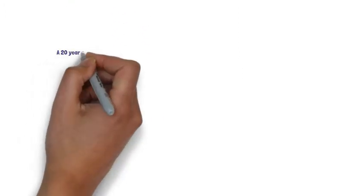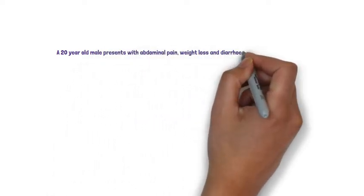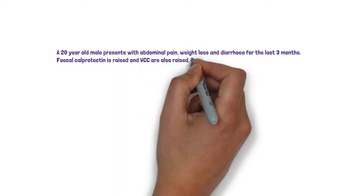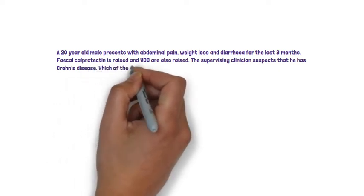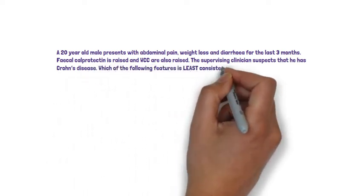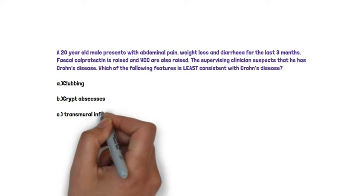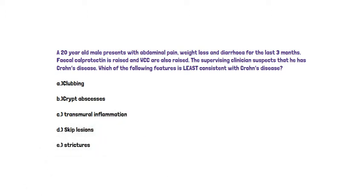The first question concerns a 20-year-old male who presents with abdominal pain, weight loss and diarrhoea, and these have been present for the last 3 months. Faecal calprotectin is raised and white cells are also raised, and the supervising clinician suspects that he has Crohn's disease. Which of the following features is least consistent with Crohn's disease? The options are A. Clubbing, B. Crypt abscesses, C. Transmural inflammation, D. Skip lesions, or E. Strictures.